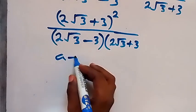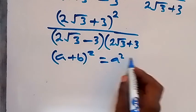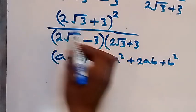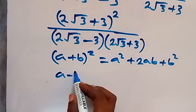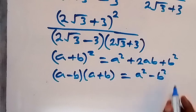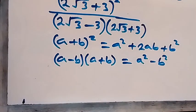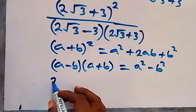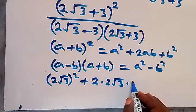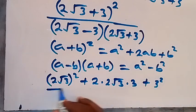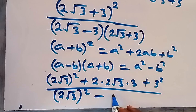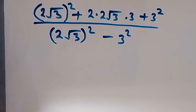For the numerator we apply the identity (a + b)² = a² + 2ab + b². For the denominator we apply the identity (a − b)(a + b) = a² − b². So the numerator becomes: (2 root 3)² plus 2 times 2 root 3 times 3, plus 3 squared, divided by (2 root 3)² minus 3 squared.